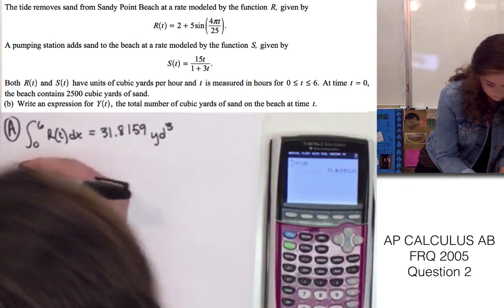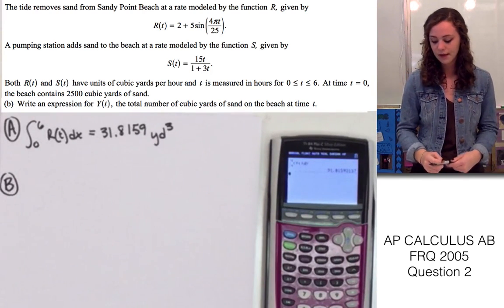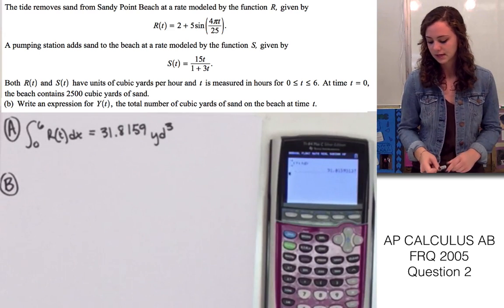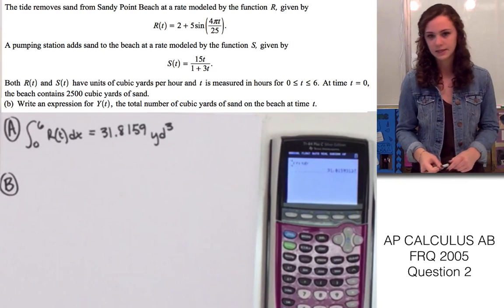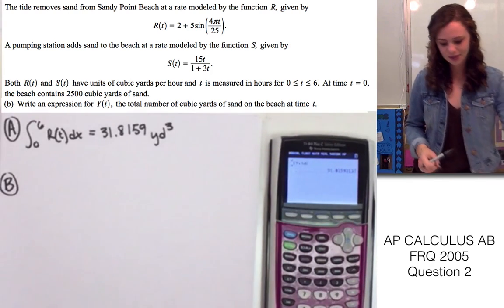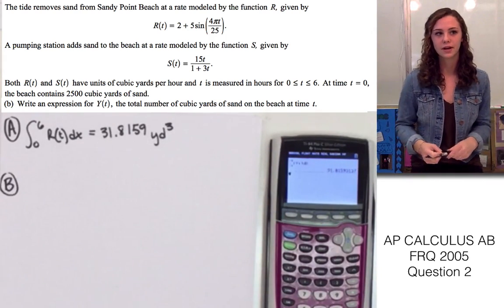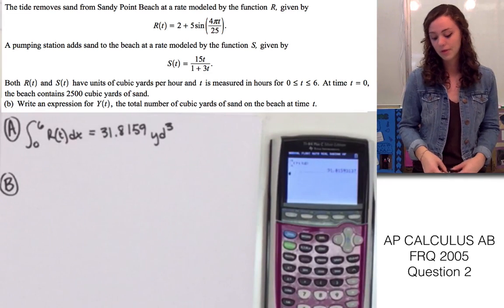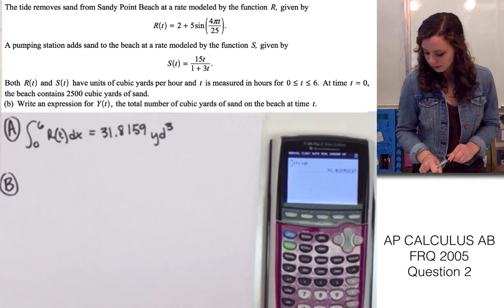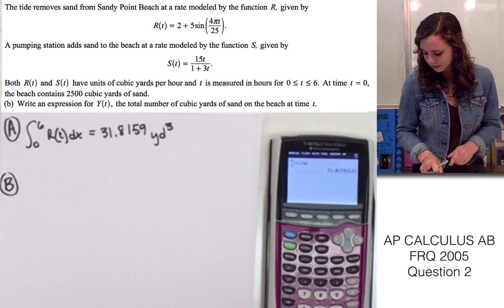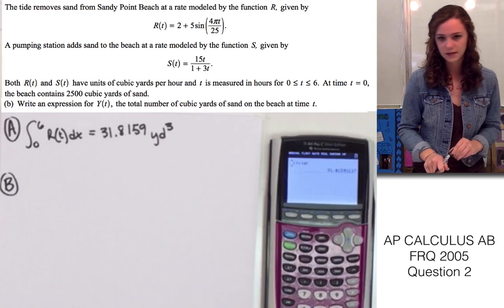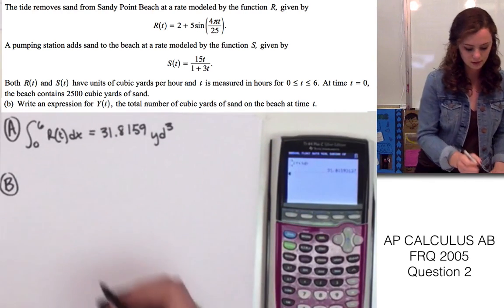For part b, we're finding an expression y of t, which is expressing the total number of cubic yards of sand on the beach at time t. Since we're finding the total number of yards, we're going to have to use integral of both r of t and s of t. Since at time equals 0, there's 2,500 cubic yards of sand, we're going to also have to add that in.